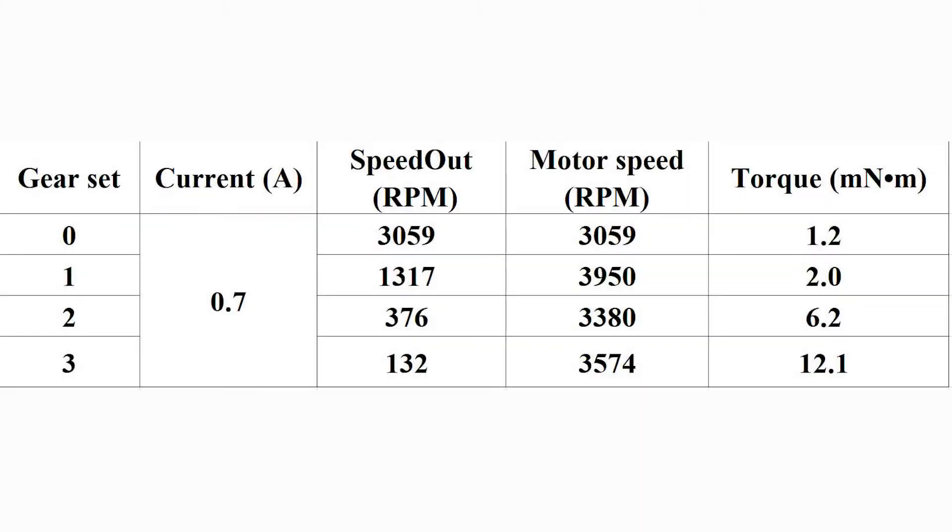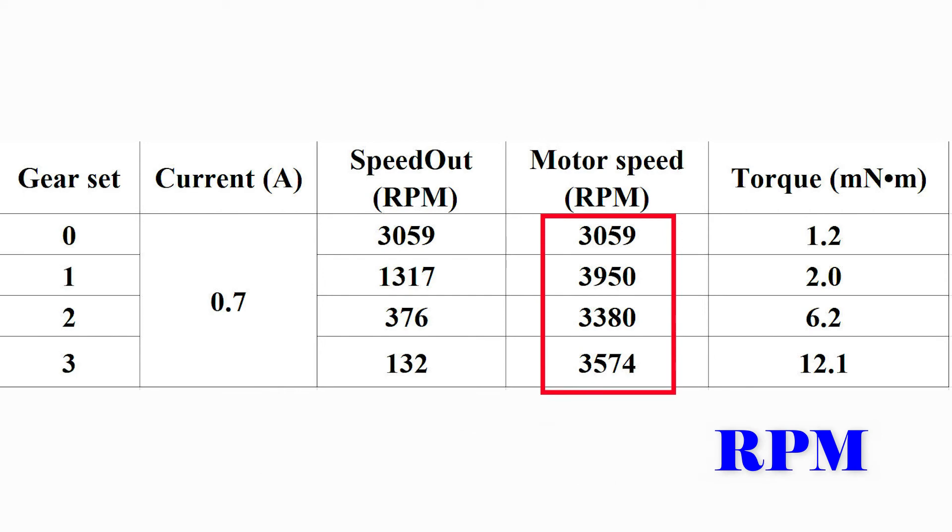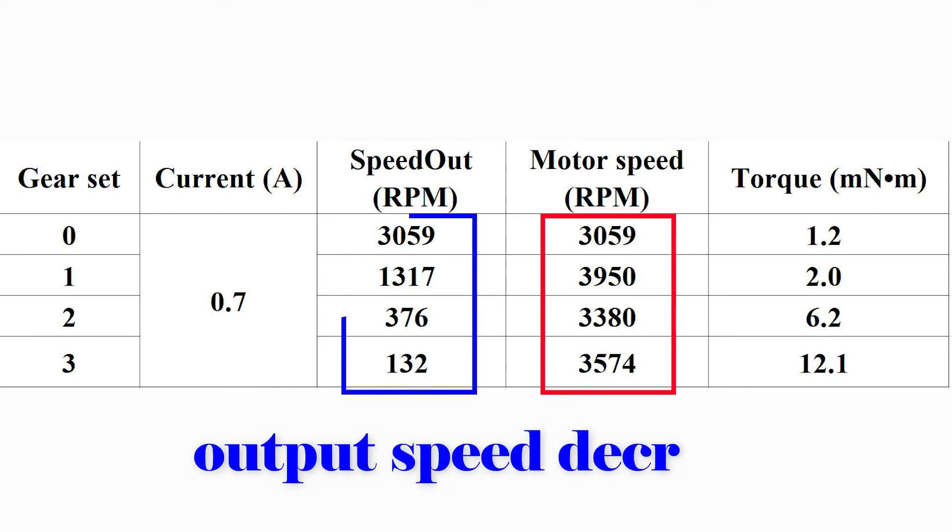The results are listed here. We can see in the same input condition, the motor works almost the same. The speed is about 3500 rpm. But the output speed is different because of the different number of gear sets.